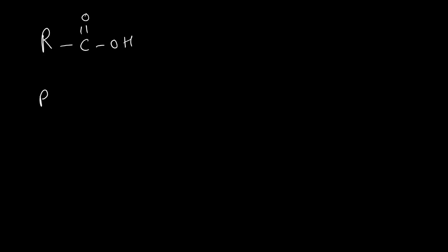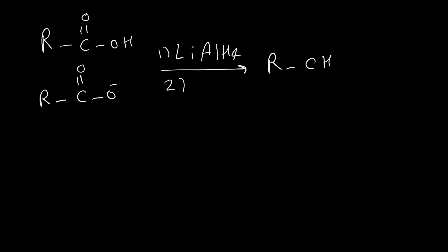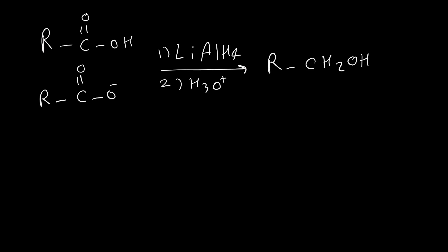Carboxylic acids or carboxylic acid anions can be reduced by lithium aluminum hydride to a primary alcohol. The first step uses lithium aluminum hydride, and the second step requires water or acidic solution for neutralization. If we skip the second step, the product will be an alkoxide anion, so by adding water or acid we convert the negative oxygen to OH. Keep in mind that carboxylic acid is acidic and LiAlH4 is a very strong base, so the first step is always formation of an anion — regardless of whether we start from the carboxylic acid or the anion, we get the same product.